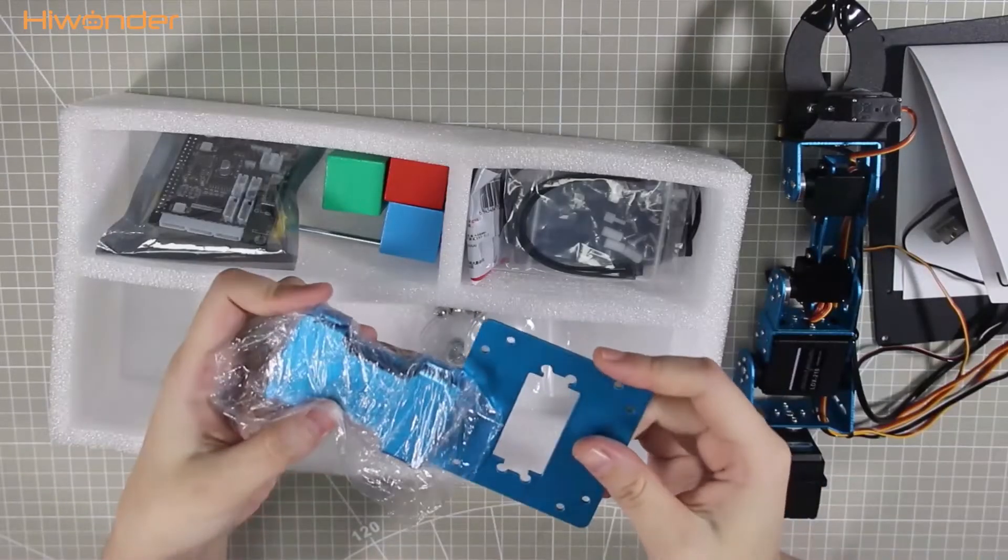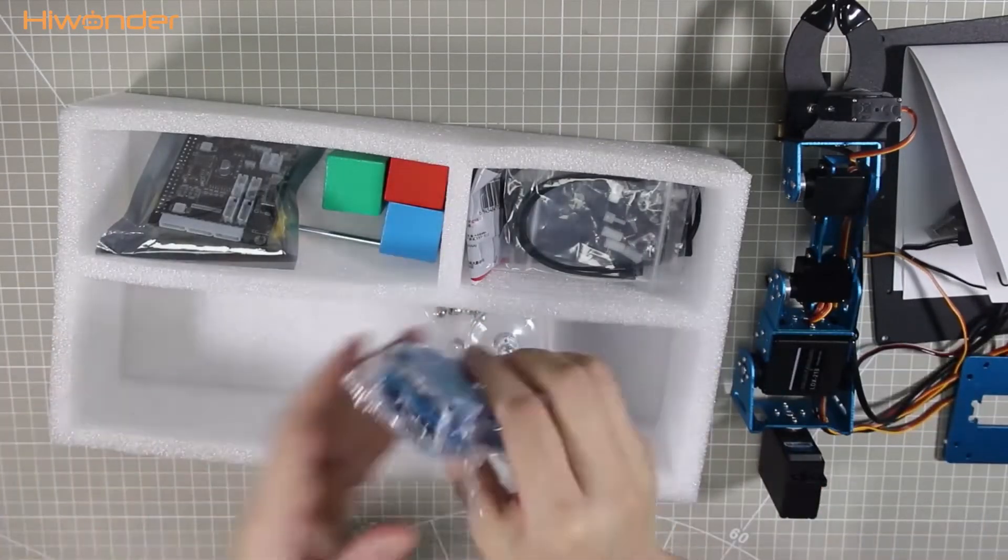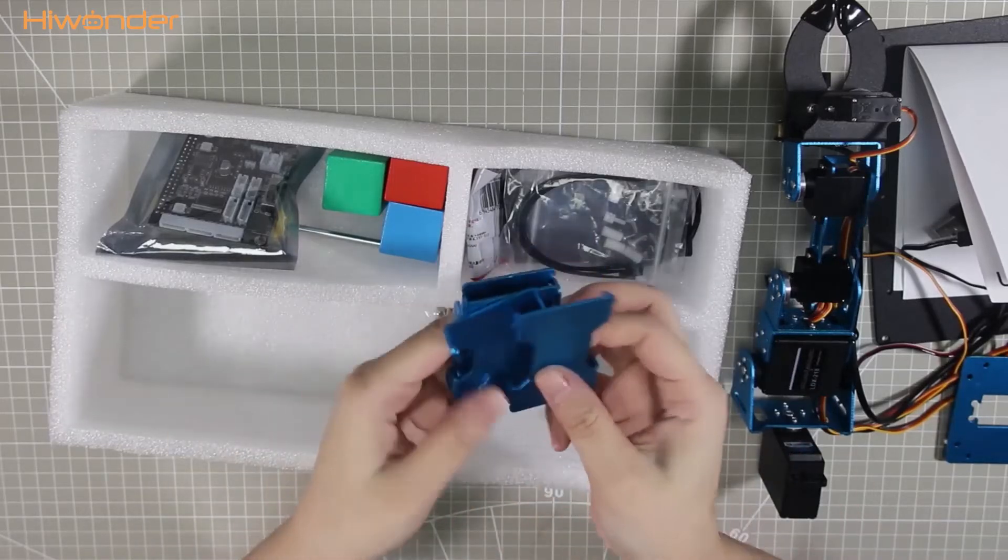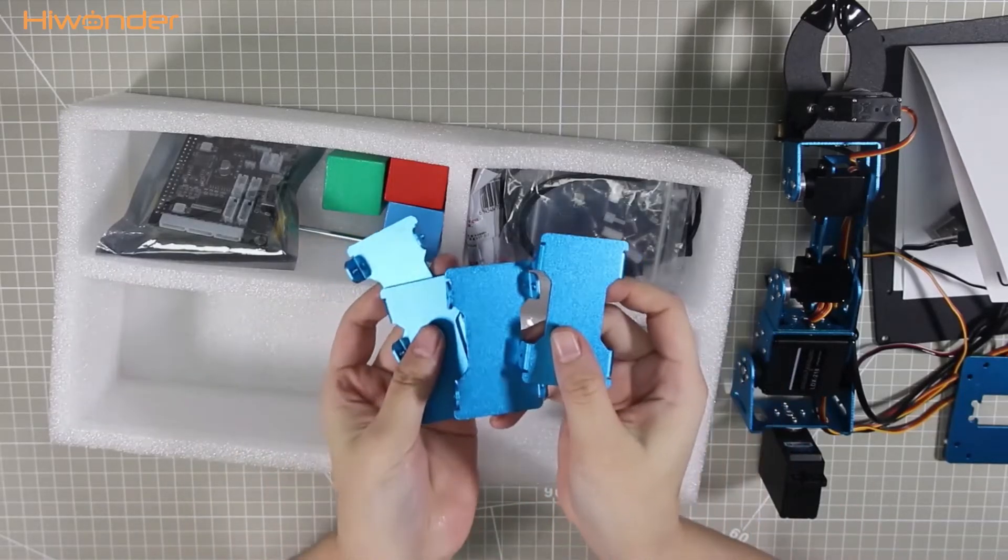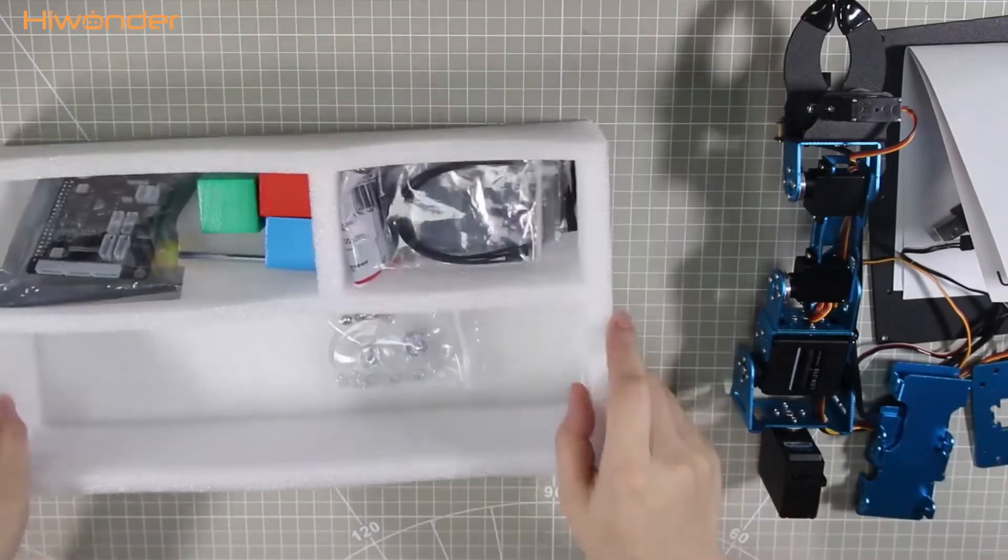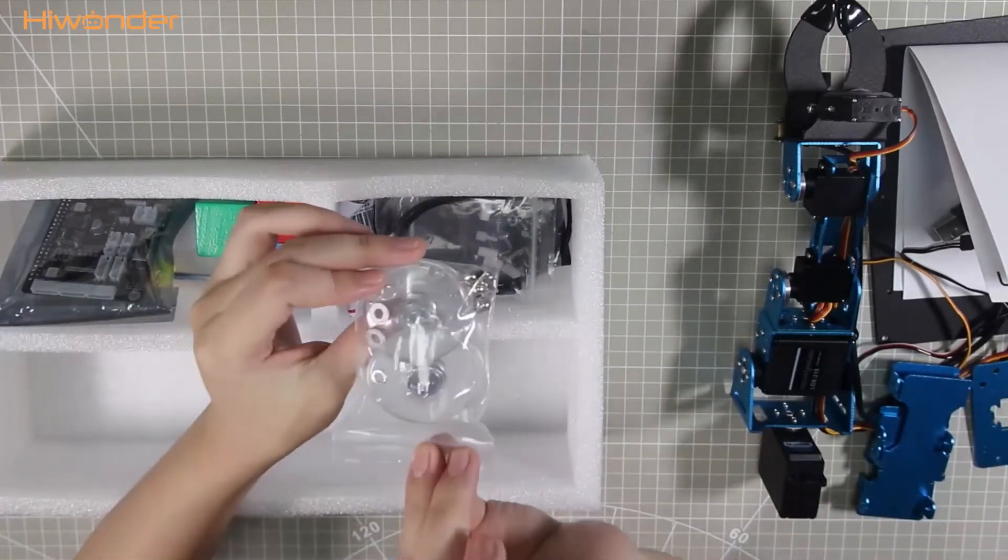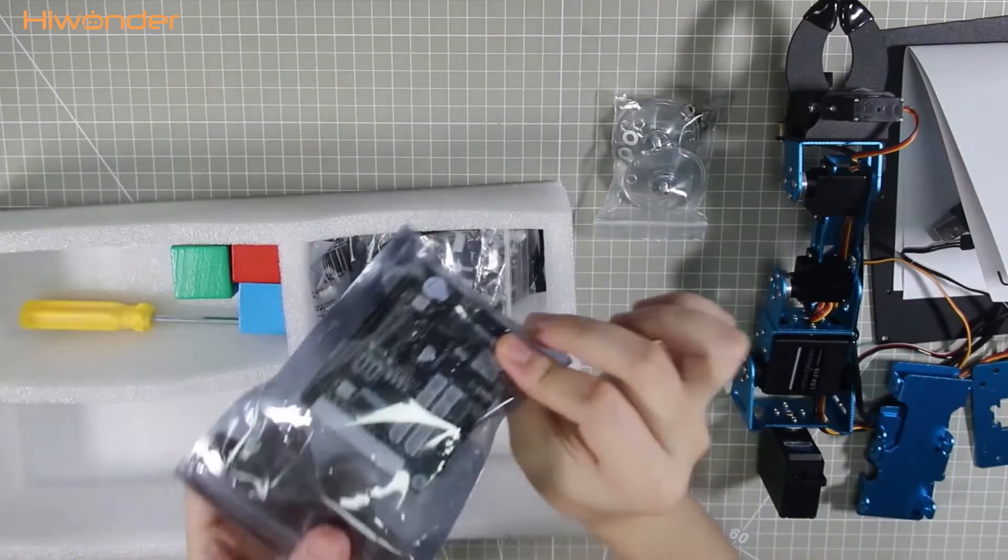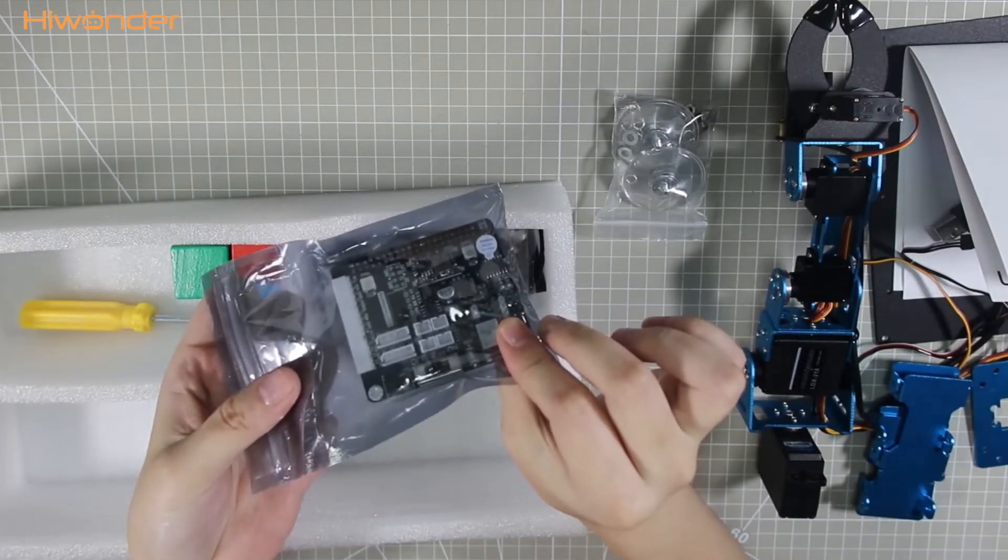This one is the upper cover of the base. These are four side covers of the base. These are suction cups for fixing the robot arm. This is the Raspberry Pi expansion board.